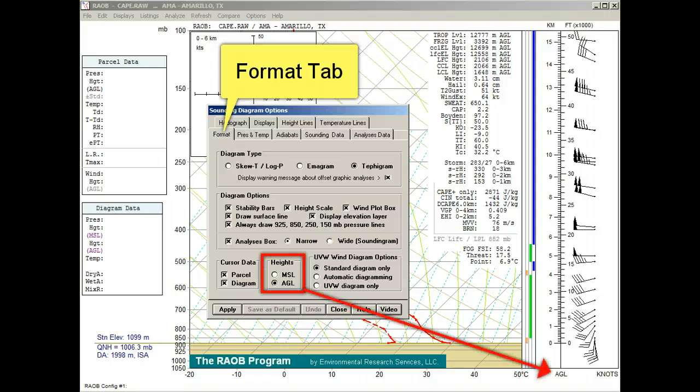The heights option allows MSL or AGL height scale labels. In the UVW wind diagram option section is a unique set of options which allow graphic display of the U, V, and W components of wind values.